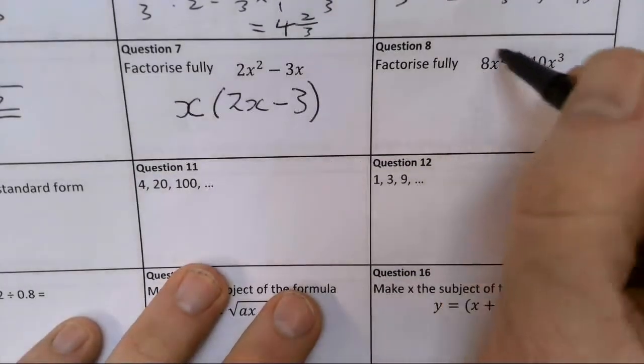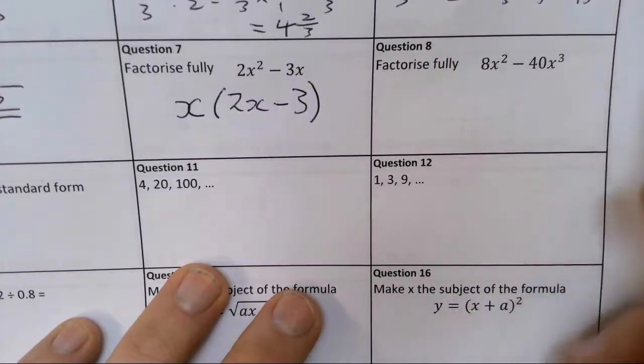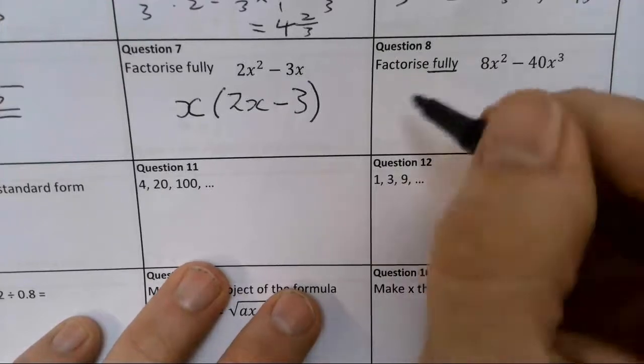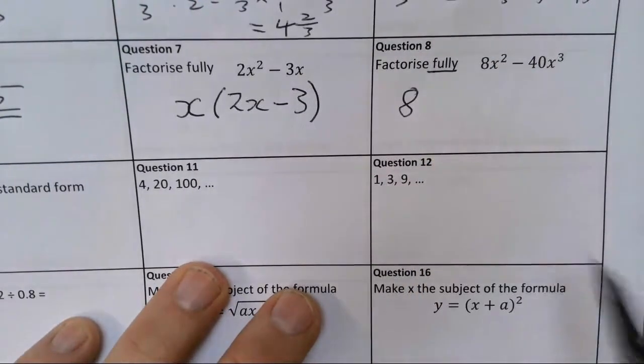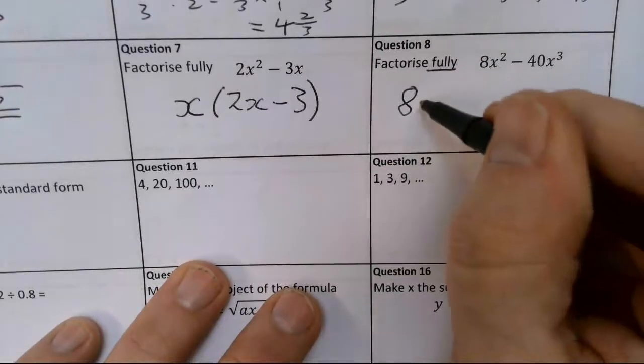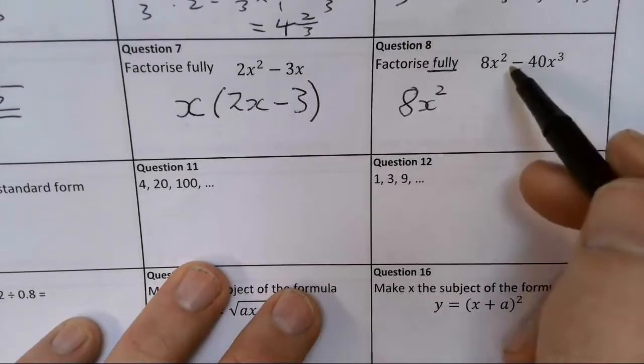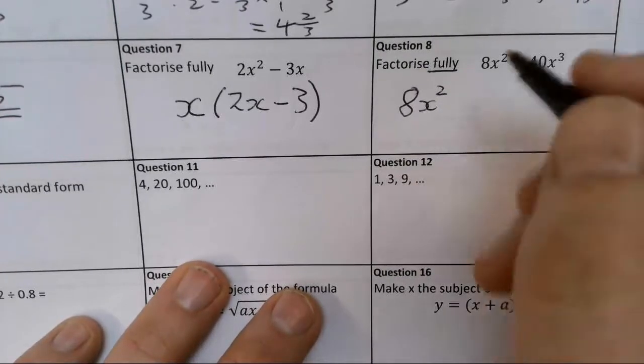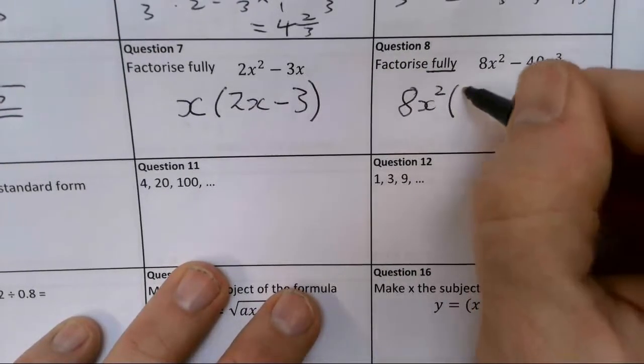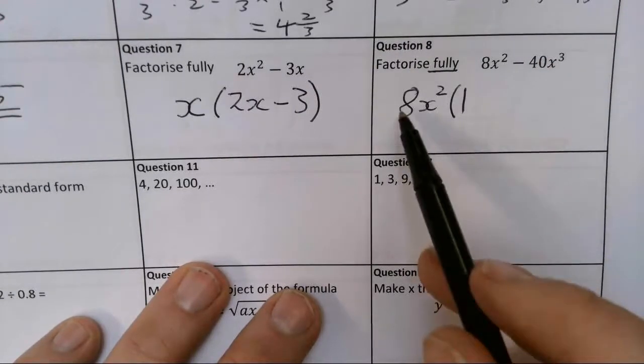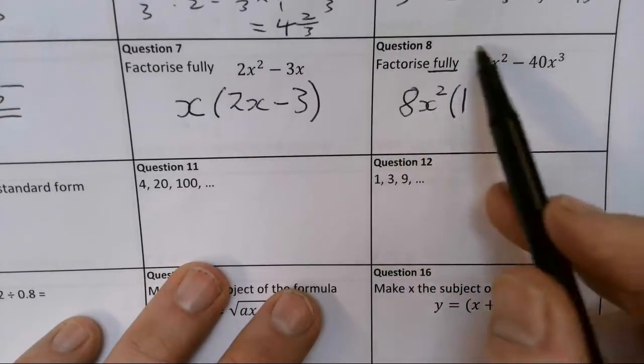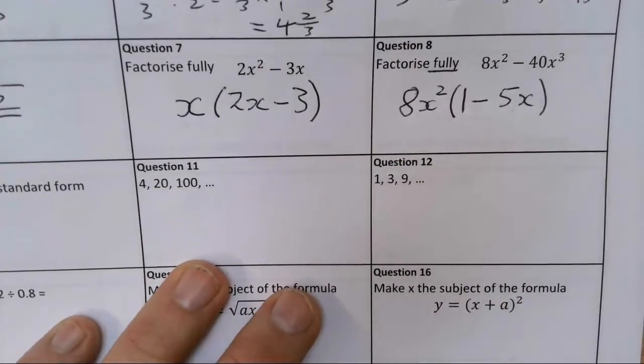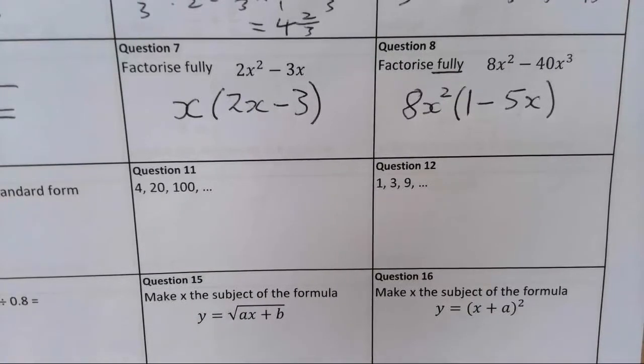This one, I've got both a factor of 8 and 40, the highest common factor. If it's fully, we need the highest common factor. So I need 8, is the highest common factor of the coefficients, and I need x squared, because x squared is just x times x, and x cubed is x times x times x. They both share the x squared part. So 8x squared times by 1 will give me 8x squared, and I'm going to take away 5x. That will give me minus 40x cubed.